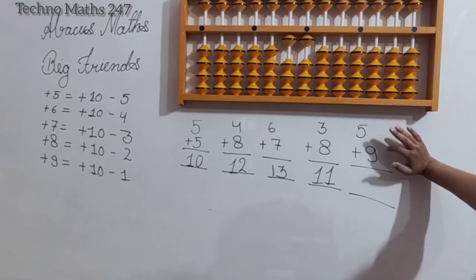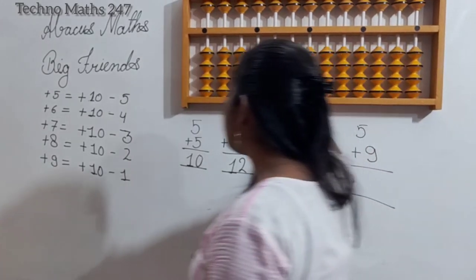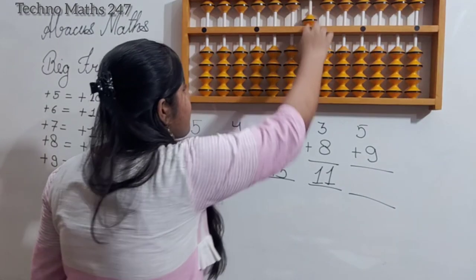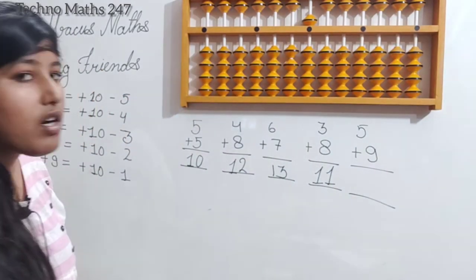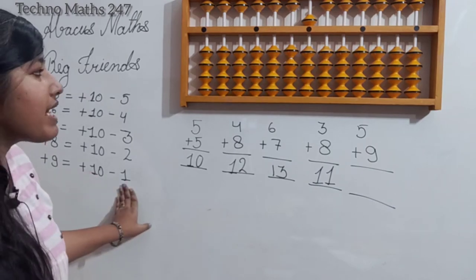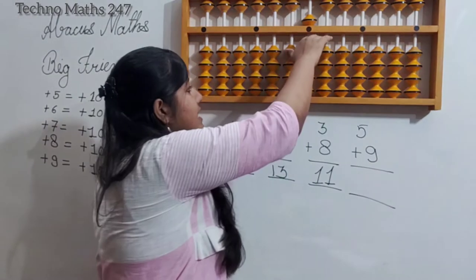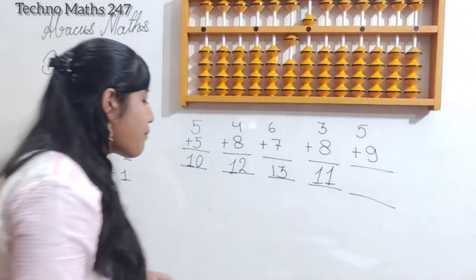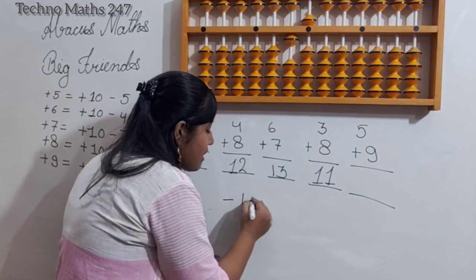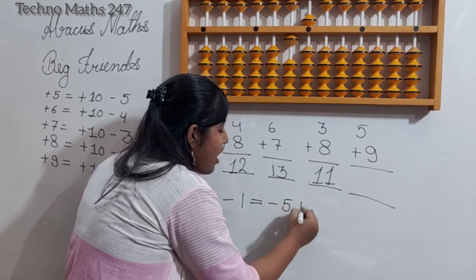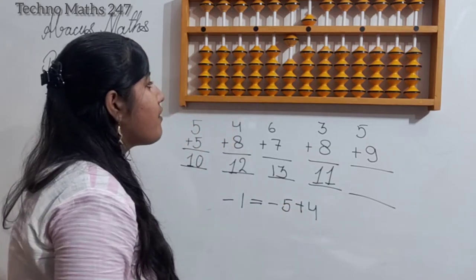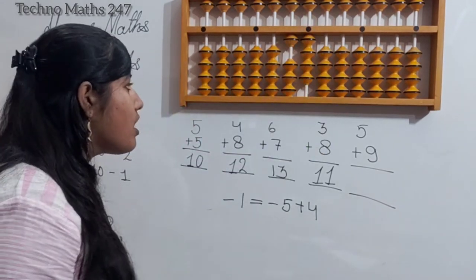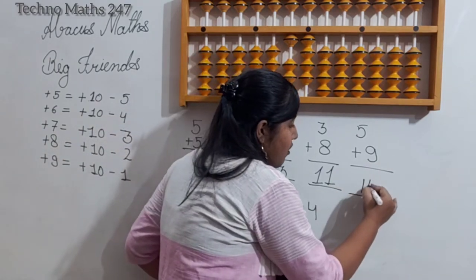Next question: 5 plus 9. We enter plus 5. We don't have 9, so we come to the big friend: plus 10 minus 1. We apply plus 10 minus 1, but we don't have 1 to subtract directly. Just as we saw before, minus 1 is equal to minus 5 plus 4. So we apply minus 5 plus 4, and the answer is 14.